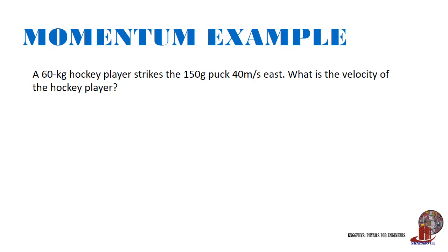The third momentum example: a 60-kilogram hockey player strikes a 150-gram puck at 40 meters per second east. What is the velocity of the hockey player? The principle used is conservation of linear momentum, where initial and final momentum are equal. For the initial stage, there isn't any motion for both the player and the puck, so the initial momentum is zero, equal to the final momentum, which is mass of the player times his velocity plus mass of the puck times its velocity.